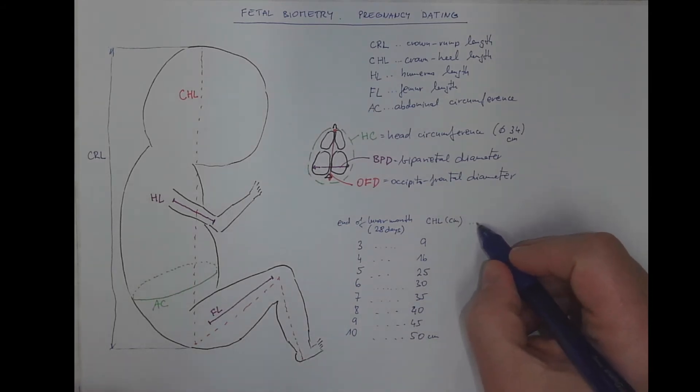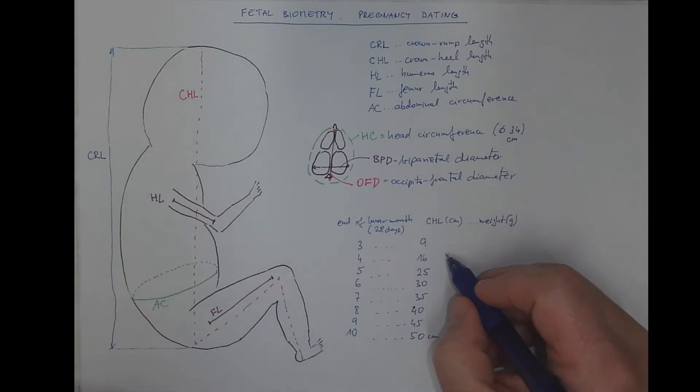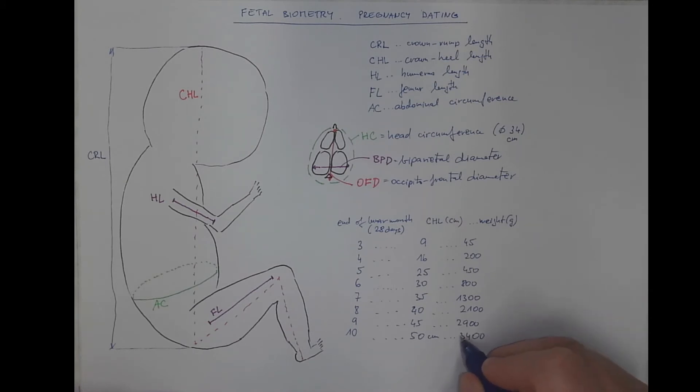But the weight in grams just for the idea would be... The corresponding weight would be 45 grams, 200 grams, 450 grams, 800, 1,300, 2,100, 2,900 and the average birth weight something around 3,400 grams, 3.5 kilos.